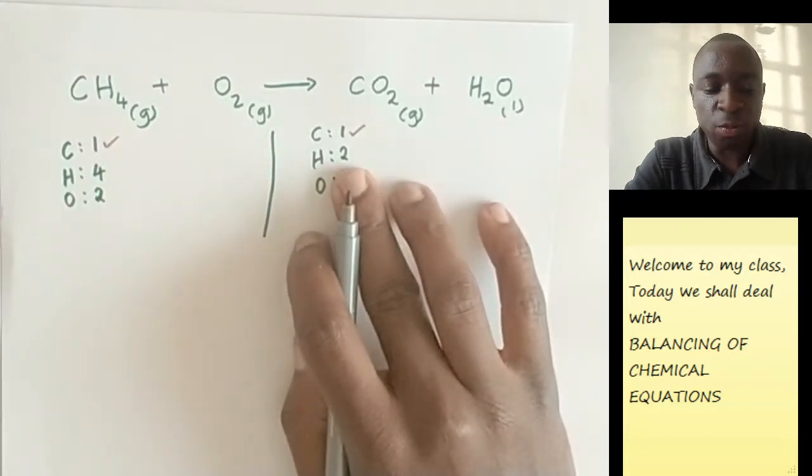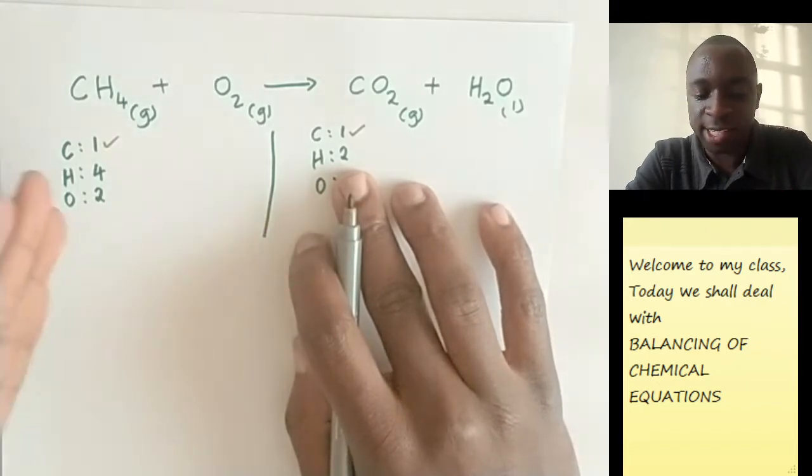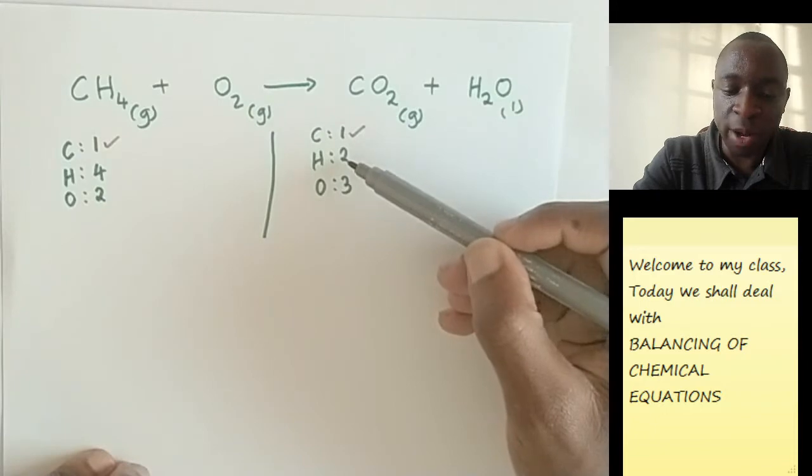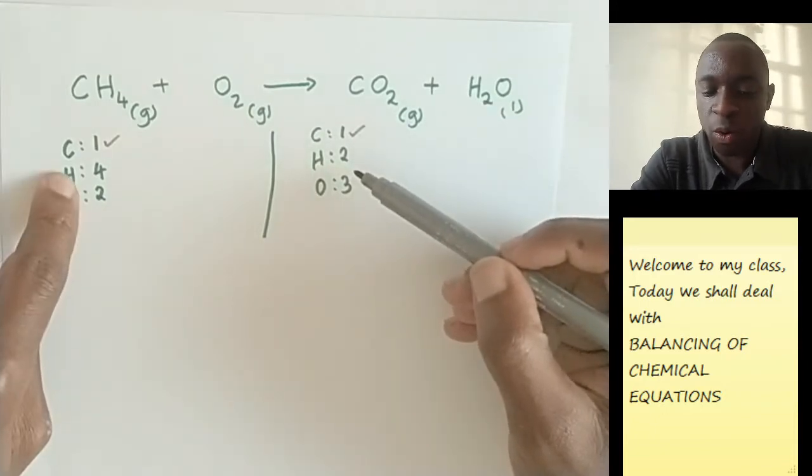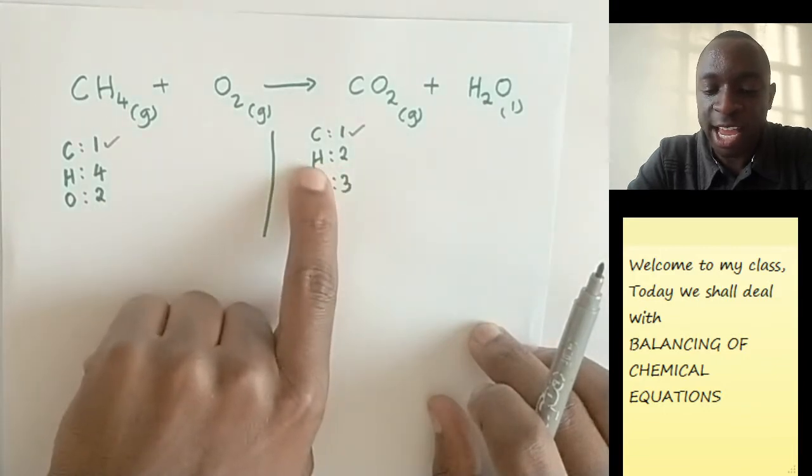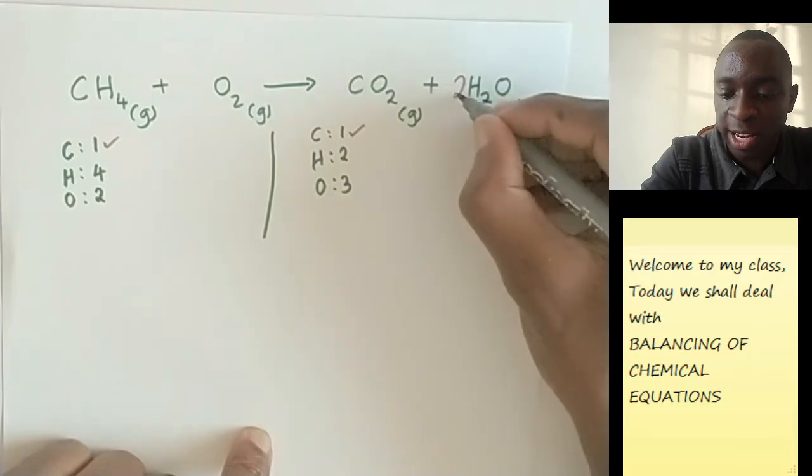So which number do we need to multiply so that we can equalize these two? We shall need to say if we multiplied two by two, we'll end up with four. So that means the number that we add before the compound that contains hydrogen is two. And that compound is water, so we add a two there.